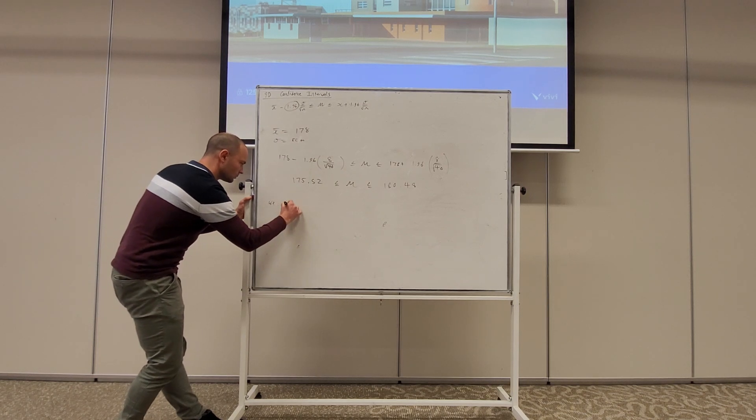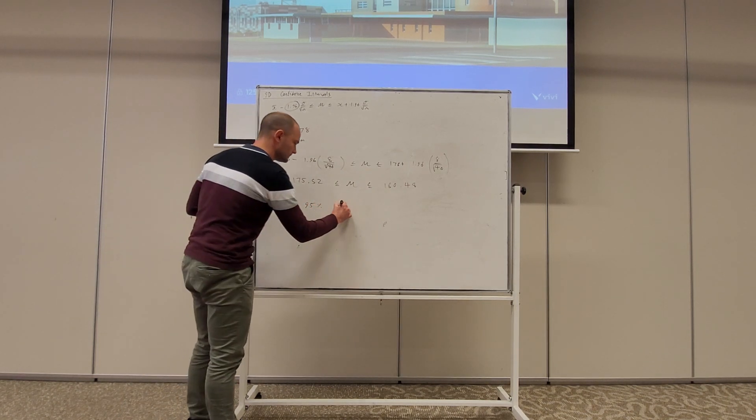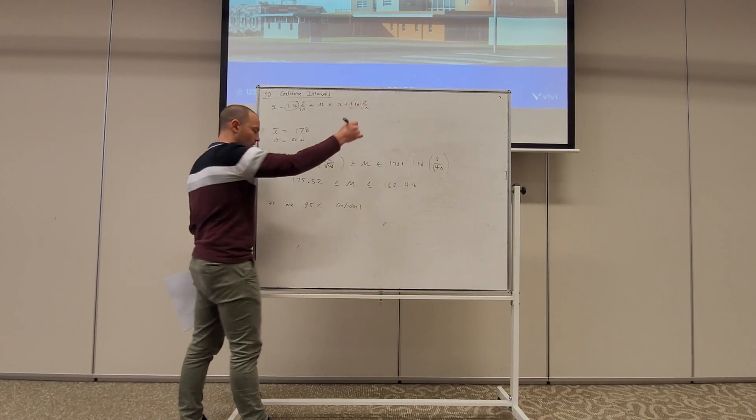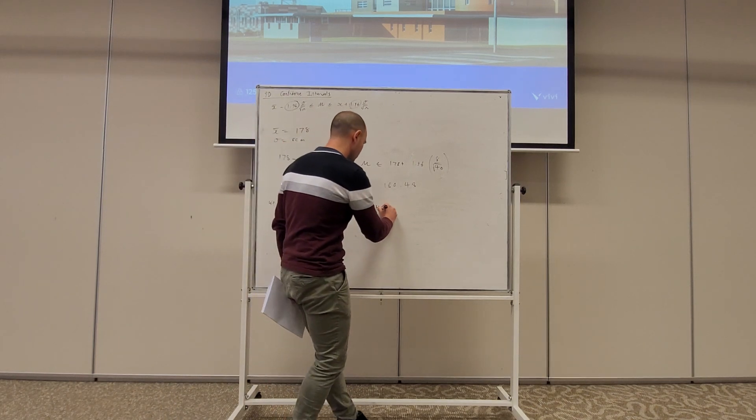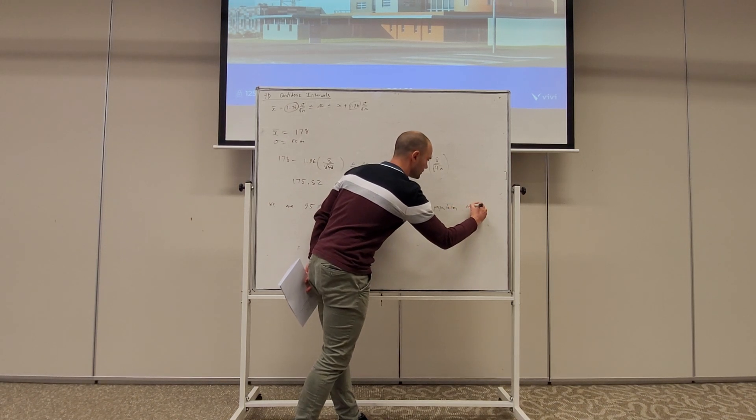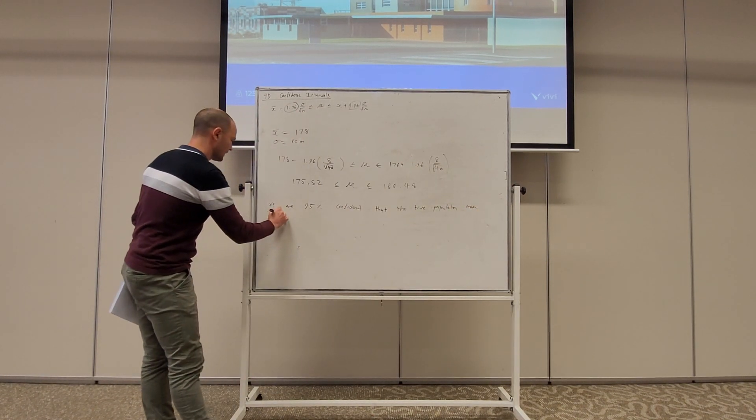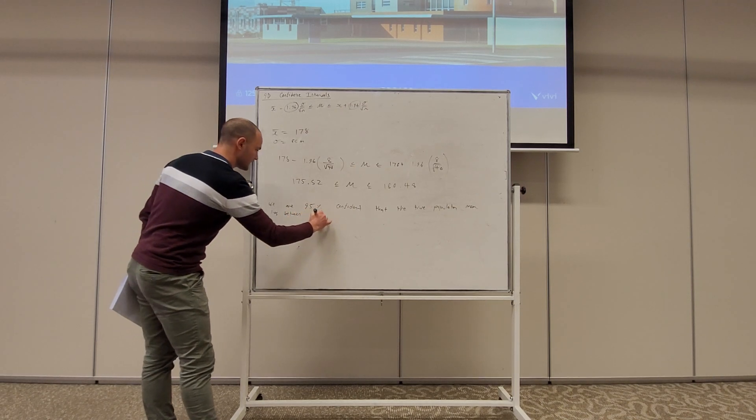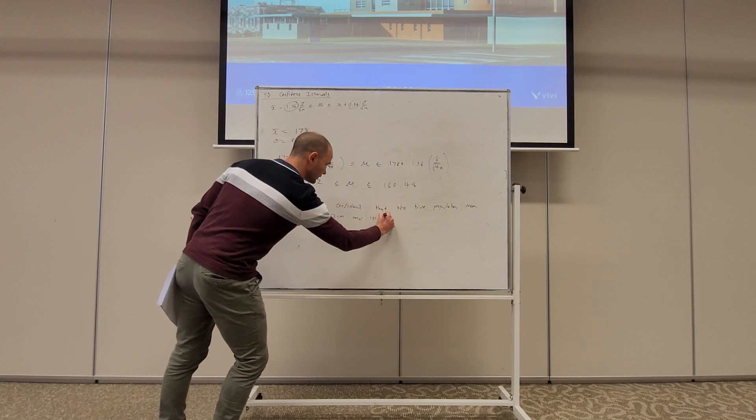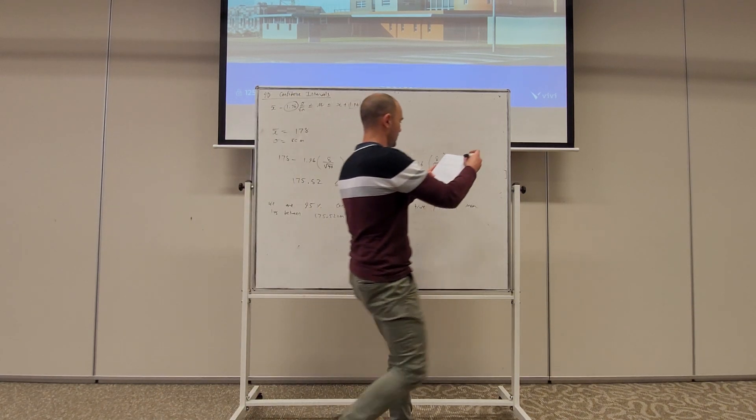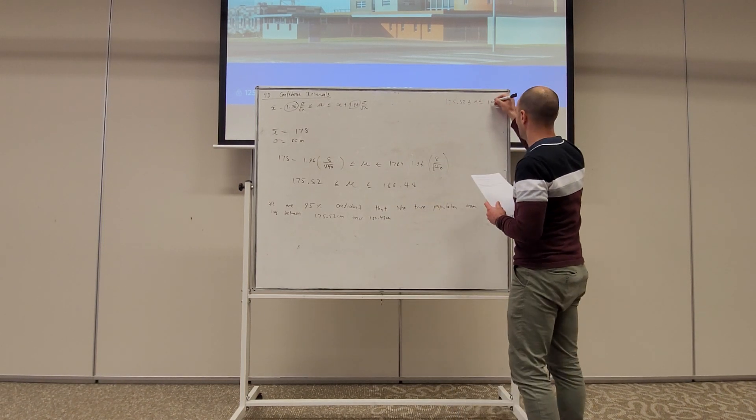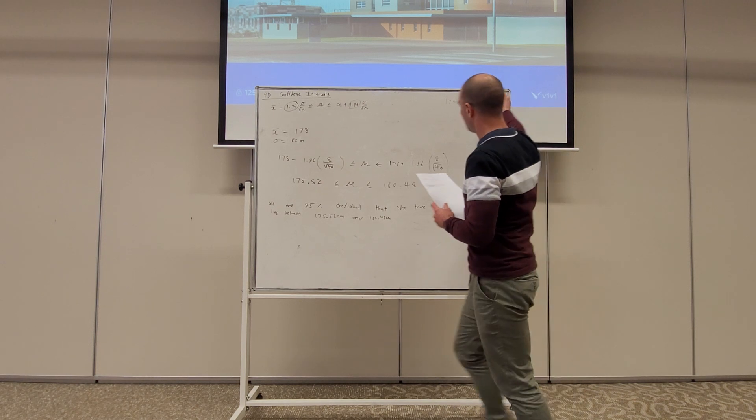We are 95% confident that the true mean population of year 12 students is between 175 and 180. So 95% confident because this is the formula for the 95% confidence interval. That's why we use 1.96. 95% confident that the true population mean lies between 175.52 centimeters and 180.48 centimeters. So that's what a confidence interval is.